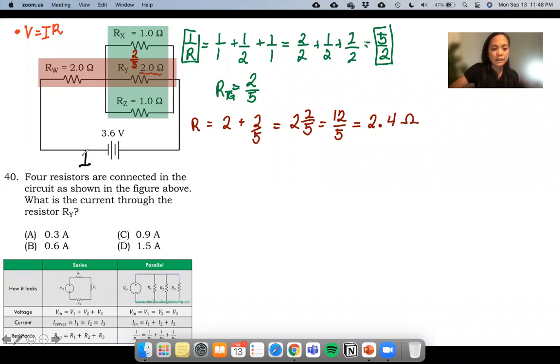For our total current in the circuit, we have I is equal to V over the total resistance. Please remember I got this from the Ohm's law formula: I is equal to V over R.